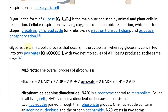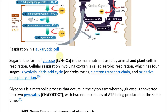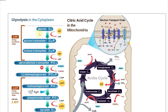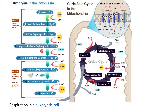Glycolysis is a metabolic process that occurs in the cytoplasm — everything inside the cell but outside the nucleus — whereby glucose is converted into two pyruvates (CH3COCOO⁻), the conjugate base of pyruvic acid, with a net gain of two ATP. Then the two pyruvates enter the mitochondrial matrix.